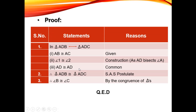What we applied earlier was: two sides and their included angle — side, angle, side. So triangle ADB is congruent to triangle ADC by the Side-Angle-Side postulate. Once we prove this congruence, the remaining three corresponding parts are automatically proved as well.